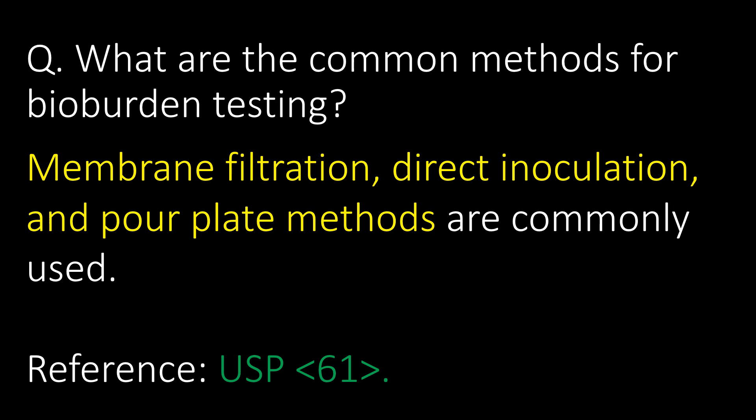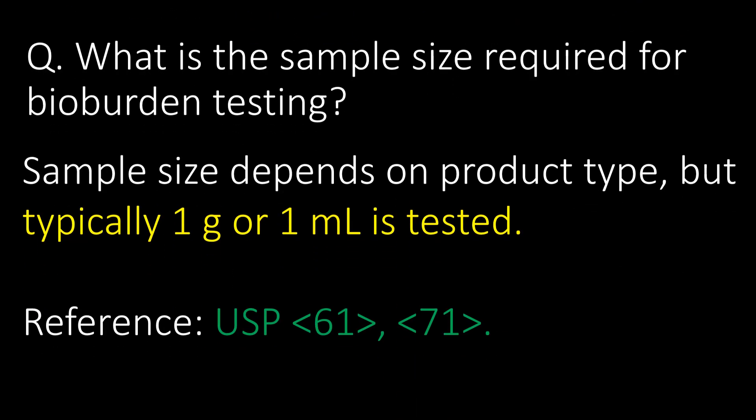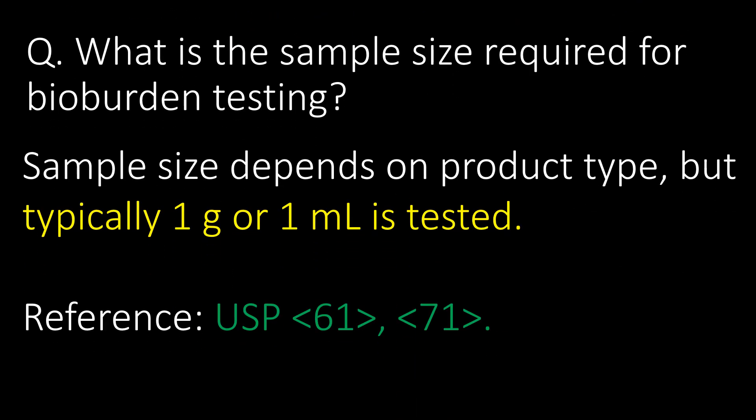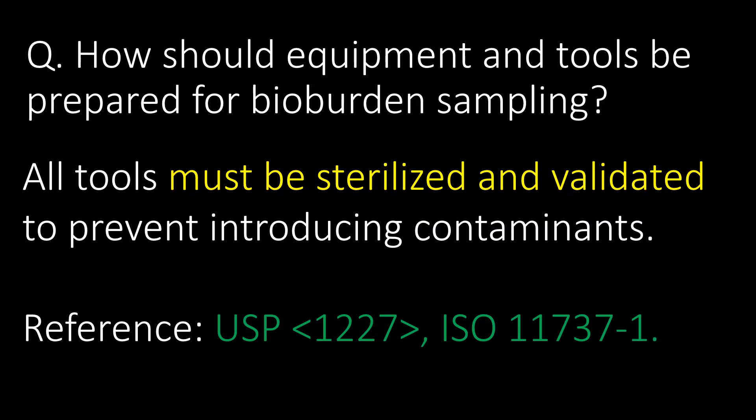What are the common methods for bioburden testing? Membrane filtration, direct inoculation, and pour plate methods are commonly used for bioburden testing. Reference USP Chapter 61. What is the sample size required? Sample size depends on product type, but typically one gram or one mL is tested. Reference USP Chapters 61 and 71.